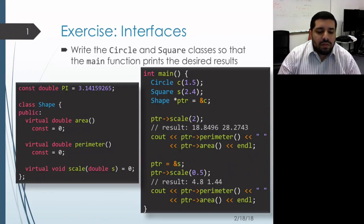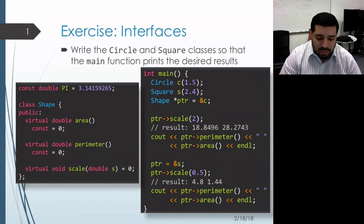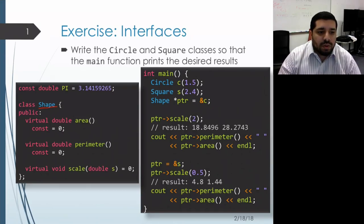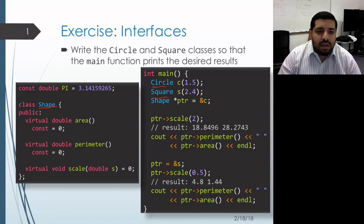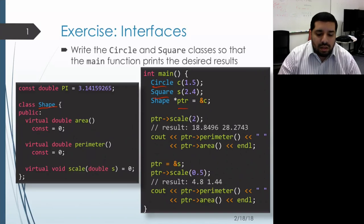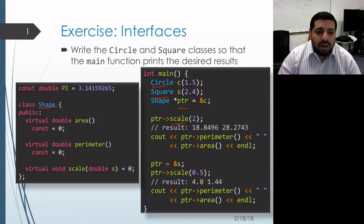Let's take a look at an example of writing an interface and writing derived classes that implement that interface. We have a shape interface that defines some pure virtual member functions, and then we'll implement concrete derived classes. If we set up a shape pointer pointing at one of those objects, whenever we call a member function through that pointer, we'll get dynamic binding — the derived class version of that member function being called.